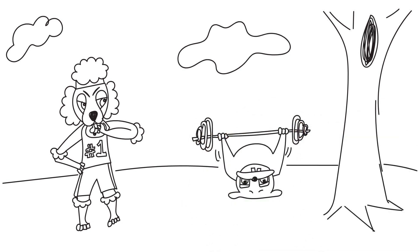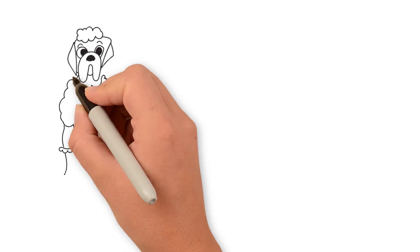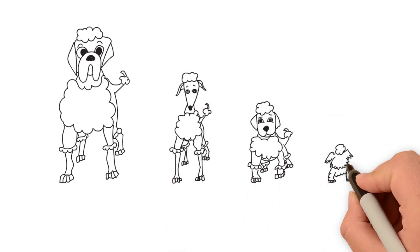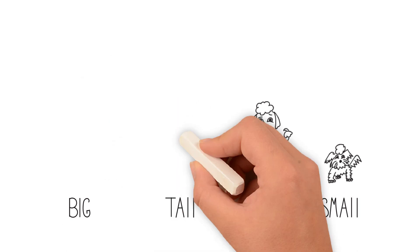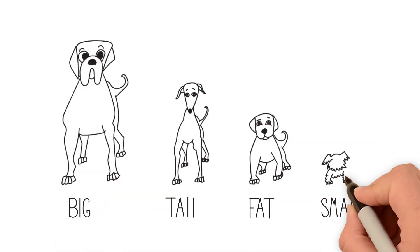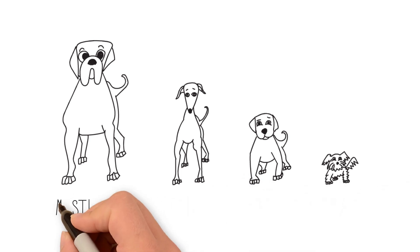But the problem is poodles think that every other kind of dog is just a really big, a really small, or a really fat poodle. When actually the other dogs aren't even poodles at all. They're terriers or mastiffs or greyhounds or labs.